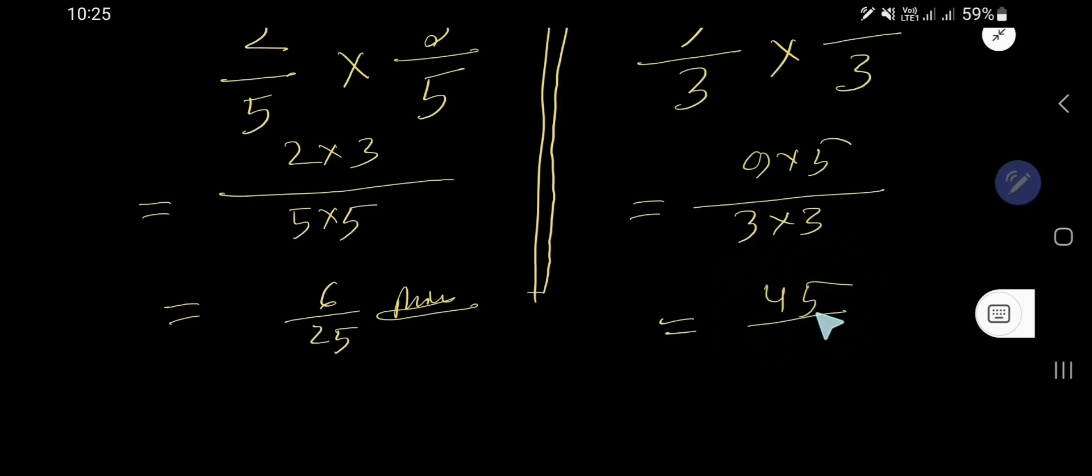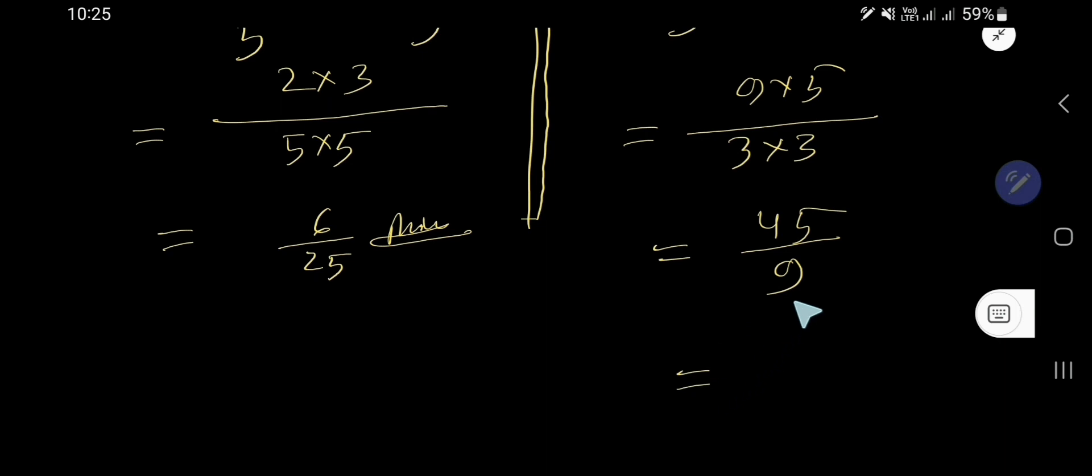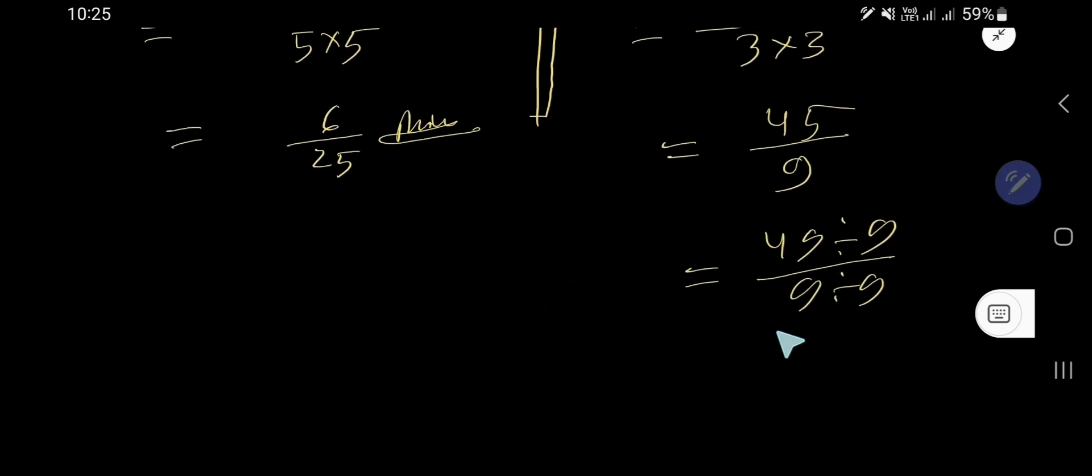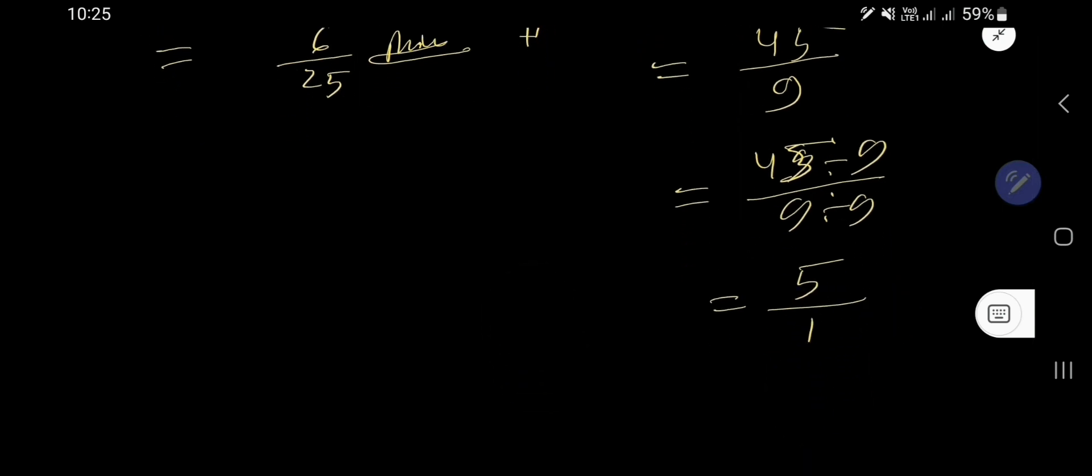We get 45 over 9. If you divide 45 by 9 and 9 by 9, you are getting 5. 45 divided by 9 is 5, 9 divided by 9 is 1. That is 5, and here 5 is the answer.